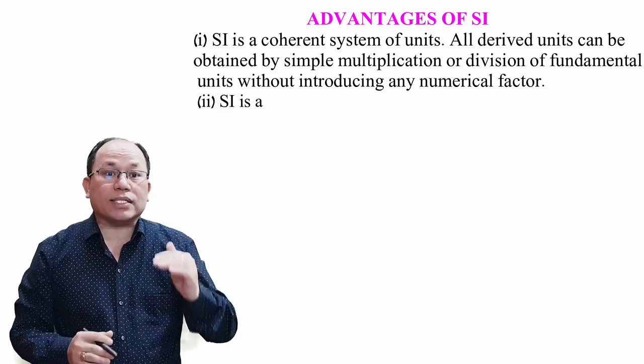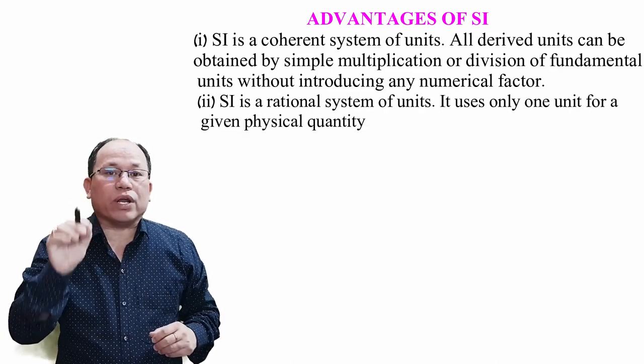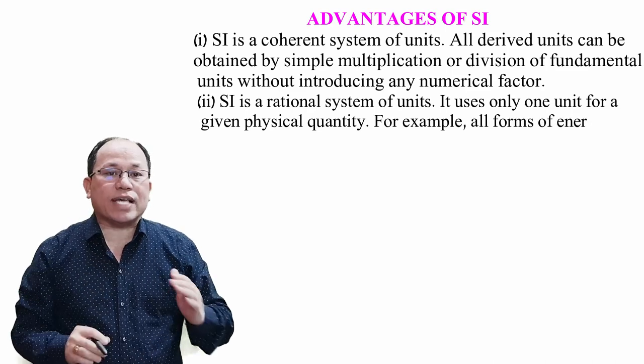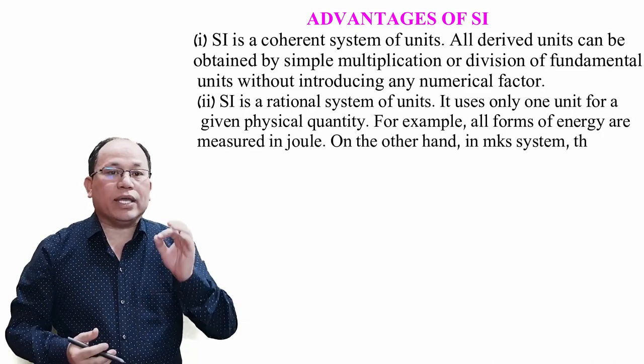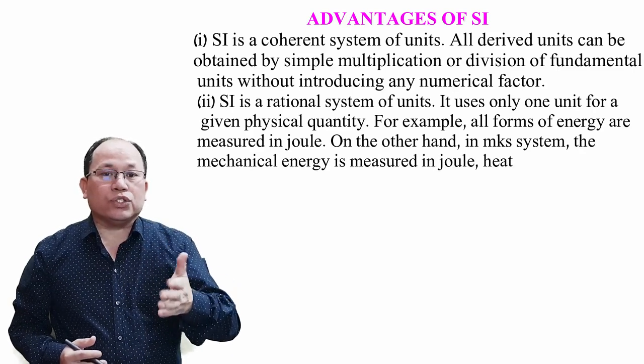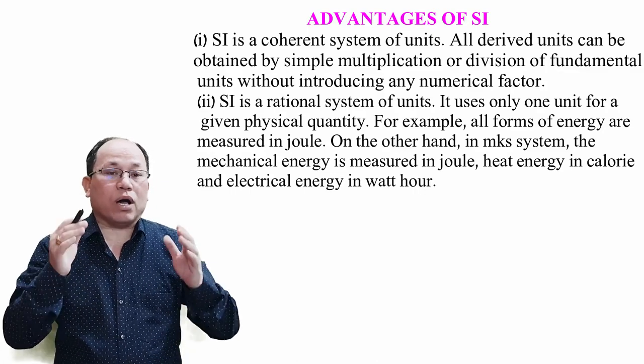Second point: SI is a rational system of units. It uses only one unit for a given physical quantity. For example, all forms of energy are expressed in Joule. On the other hand, in MKS, the mechanical energy is measured in Joule, heat energy in calories and electrical energy in watt hour.